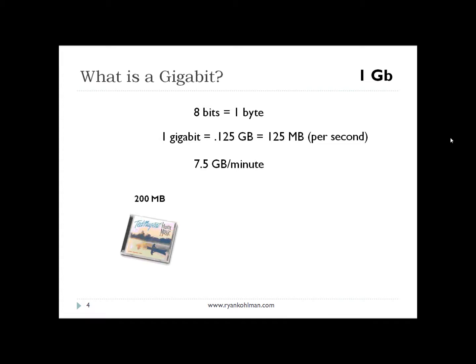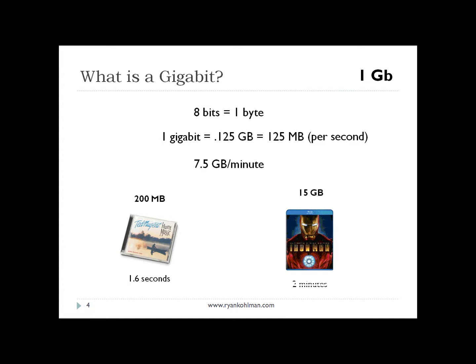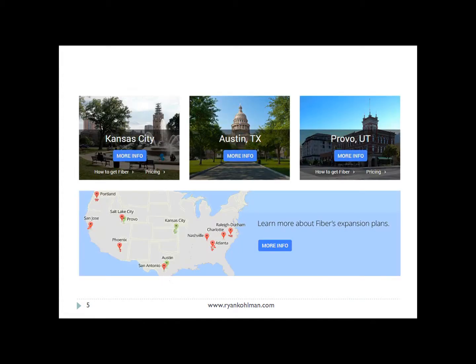To put that in real-world terms: a typical CD or full music album is about 200 megabytes — Google Fiber could theoretically download that in 1.6 seconds. If you were to download something like Iron Man Blu-ray through iTunes, which is about 15 gigabytes, you could download that in about two minutes. Pretty impressive speeds when you start to think about what that translates to in the real world.